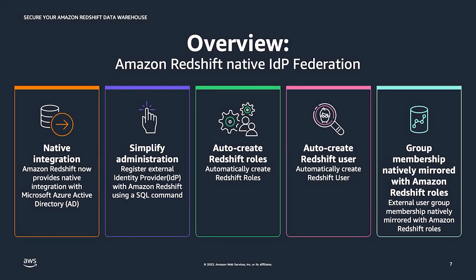How it works is: assume you are using Azure AD. With this enhancement, you can register your Azure AD as an identity provider with Redshift, and then a database role will be created with the same name as your group in Azure AD. When you log into Redshift, the user's group membership will be retrieved from Azure AD and mapped to the right database role. You can perform all the privileges given by Azure AD.